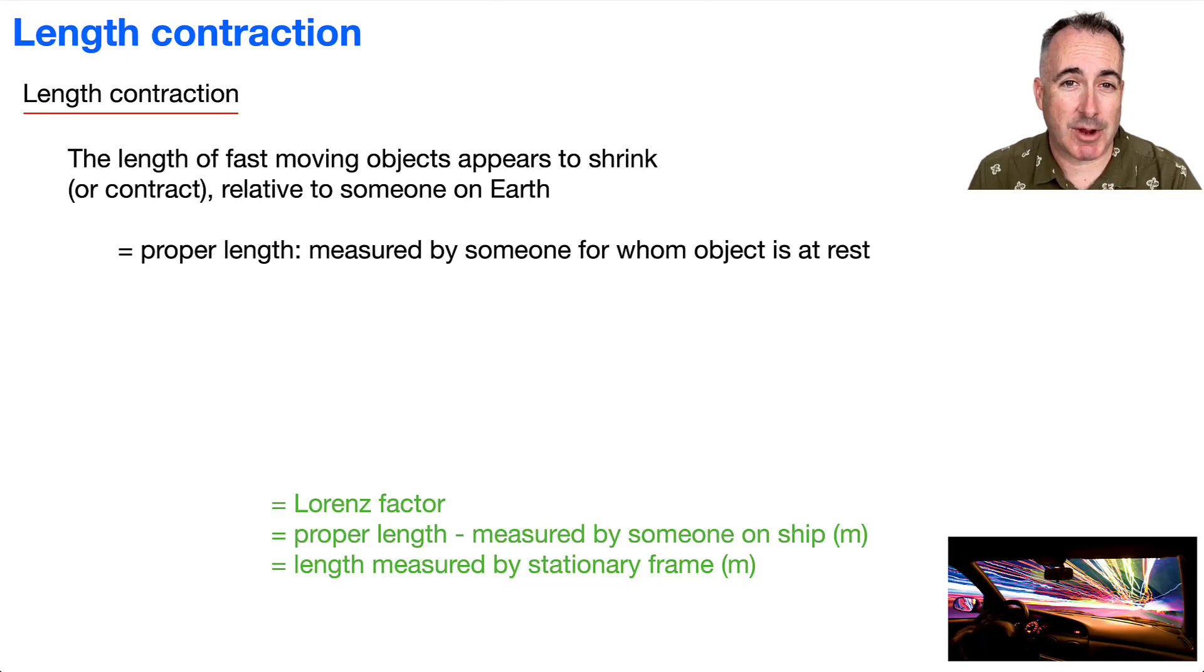All right, now let's talk about length contraction. It's another really interesting thing that comes from special relativity. This is the idea that the length of a fast-moving object, like if you're in your spaceship traveling some considerable fraction of the speed of light, then you will appear to shrink.